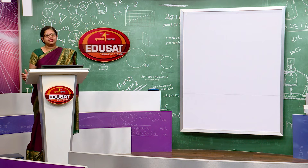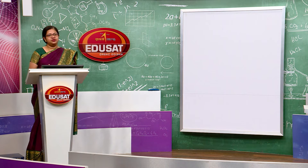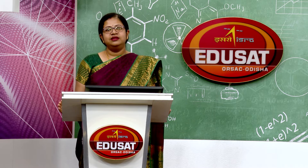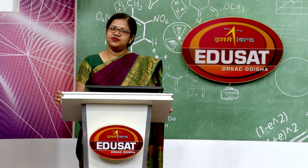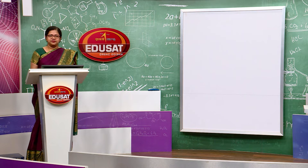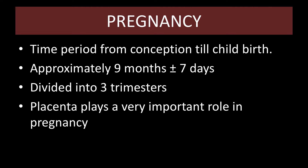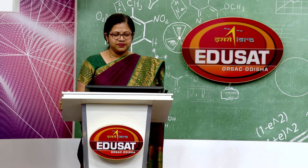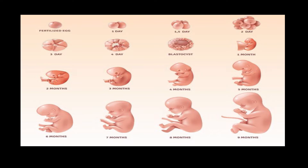We had already discussed the difference between a fetus and the embryo in our last class. Today we will see how changes take place gradually from a fertilized egg to the completely grown baby. This entire period of 3 trimesters can also be divided week-wise. We will deal with the broad 3 divisions — the 3 trimesters — and the changes taking place during each. The placenta, formed by the contribution of both maternal and fetal parts, plays a very important role in pregnancy.